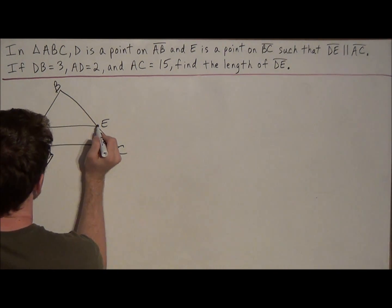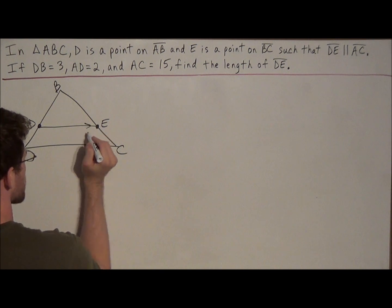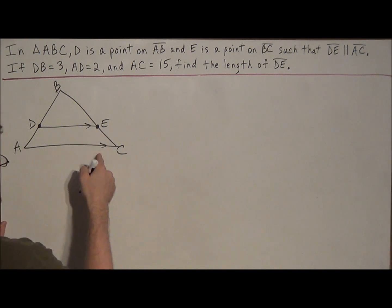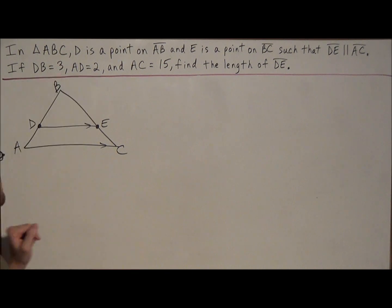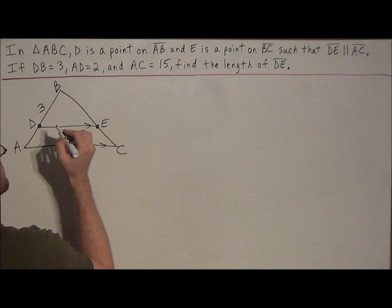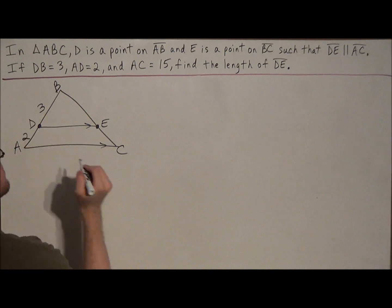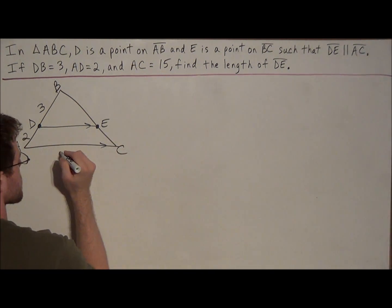So we can see that these lines are parallel, and if we want to draw in our symbols to indicate that DE and AC are parallel. But now we fill in the given information: we have that DB is equal to 3, AD is equal to 2, and we have that AC is equal to 15.